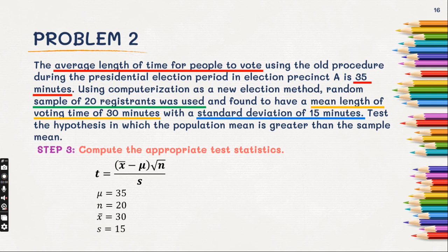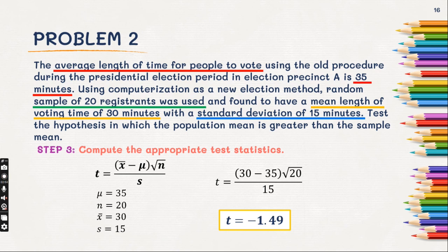Let us substitute the values into our formula: 30 minus 35, multiplied by the square root of 20, divided by 15. You can calculate it using your calculators. The T value or test statistic is equal to negative 1.49.